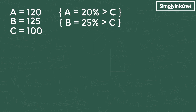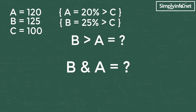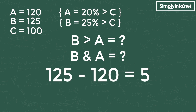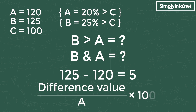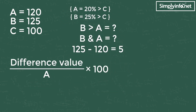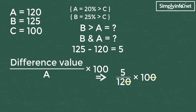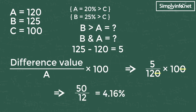We need to find out how much percentage B is more than A. First we find the difference between B and A: 125 minus 120 equals 5. For finding the percentage we apply the formula: difference value divided by A, into 100. Here the difference value is 5 and A is 120. So 5 by 120 into 100 — the zero from above and below gets cancelled — giving 50 by 12, which equals 4.16%. The answer is 4.16%. See how simple it is.